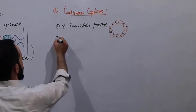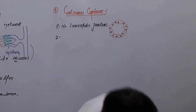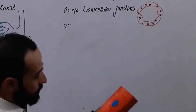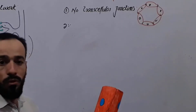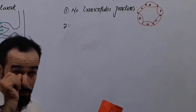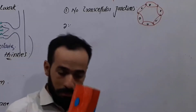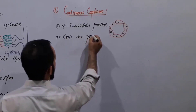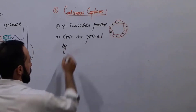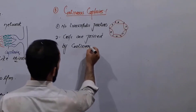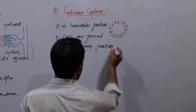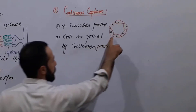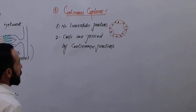The next important point about continuous capillaries is that these capillaries are joined by non-permeable junctions. They have no permeability — all the endothelial cells are close to each other with no special gap junctions in between them. Cells are joined by continuous junctions, meaning there is no discontinuation in between the endothelial cells.